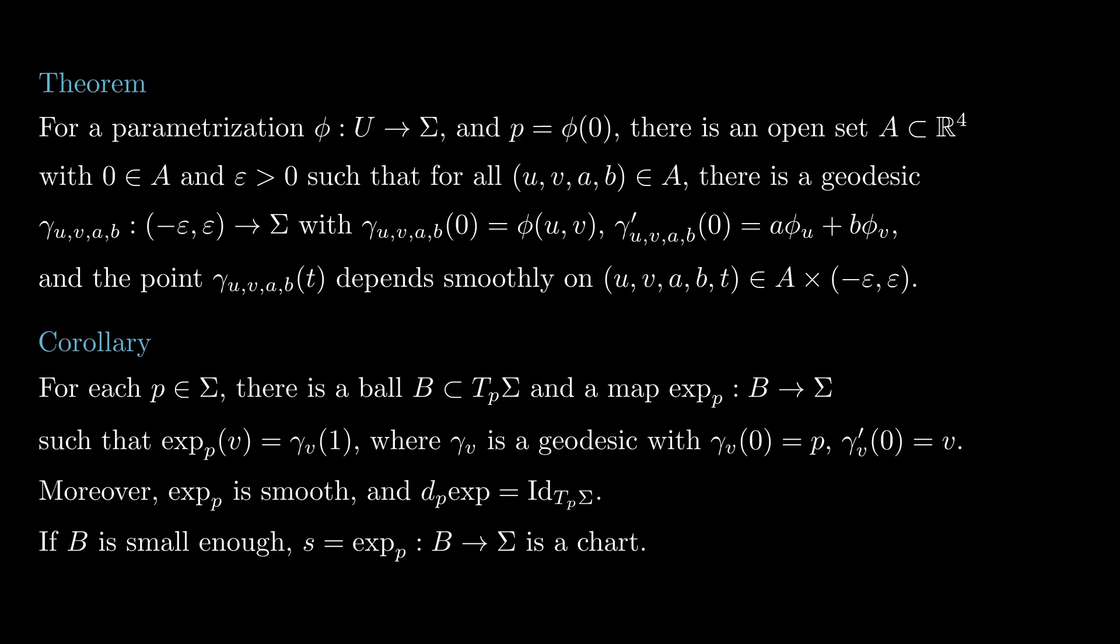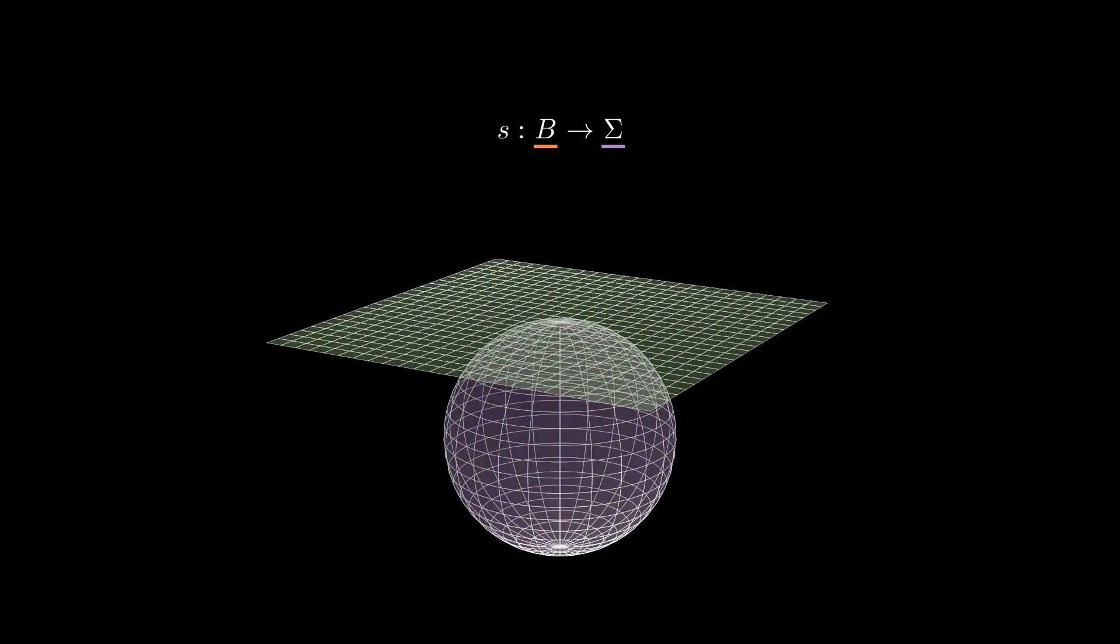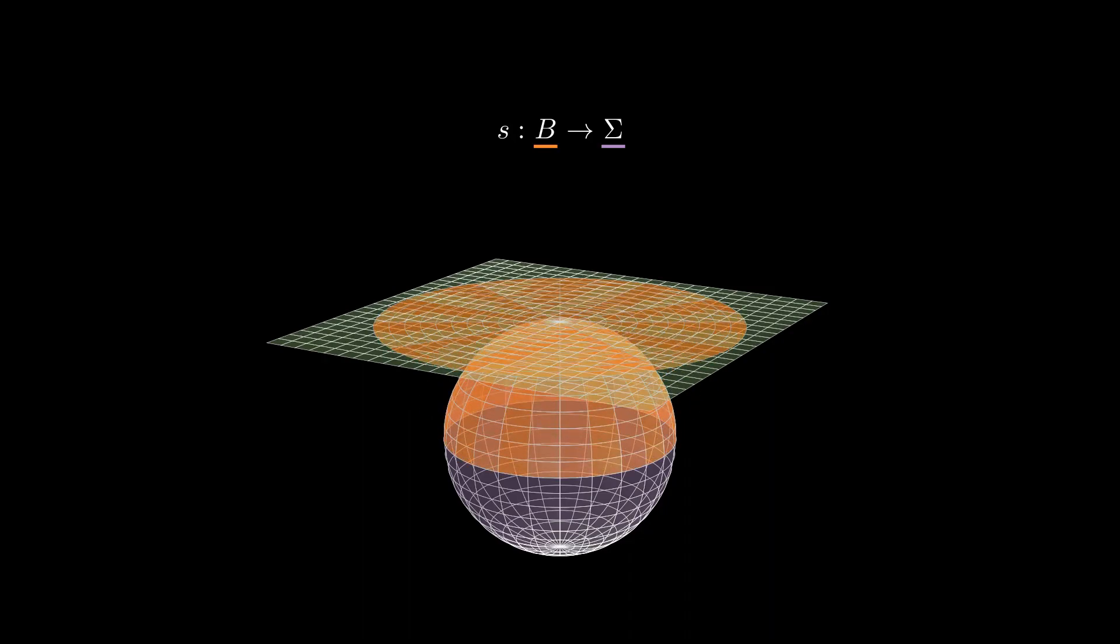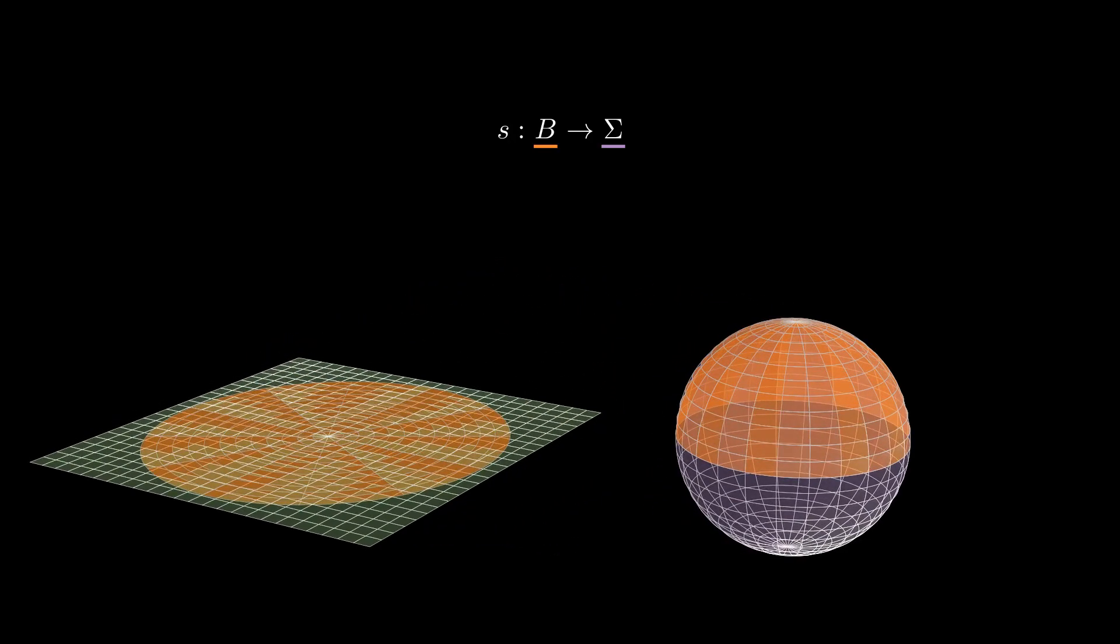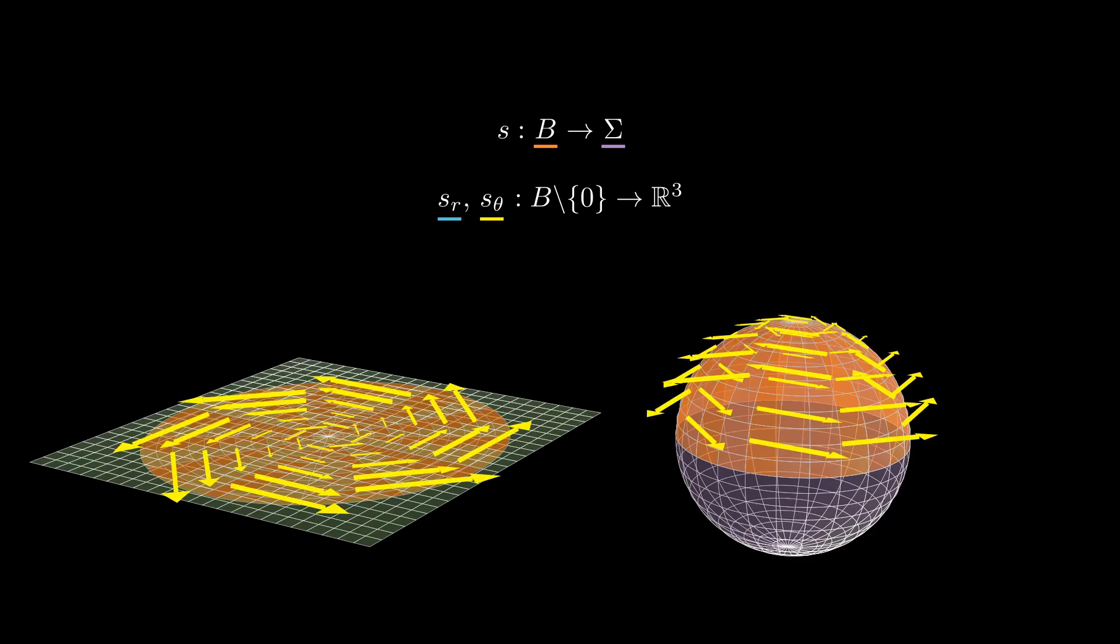This parametrization induces polar coordinates r theta where r denotes the distance to the origin while theta denotes the angle with respect to a fixed direction in tp sigma. These coordinates induce vector fields sr and s theta on the image of b minus p. Notice that since geodesics have constant speed, the length of sr is 1 whenever it is defined.